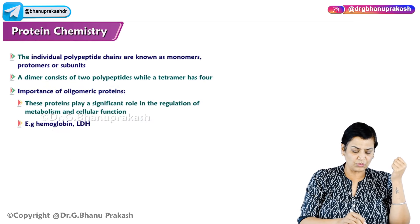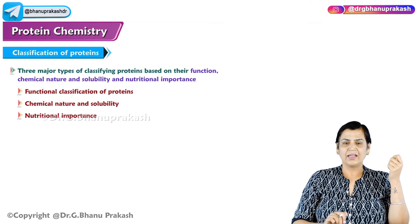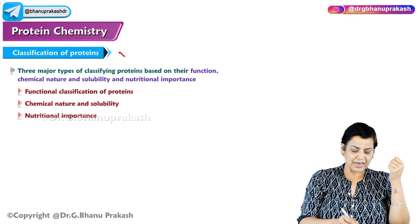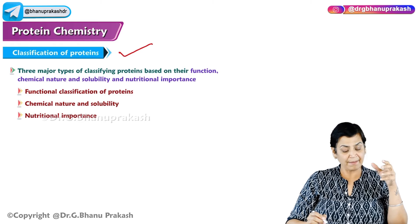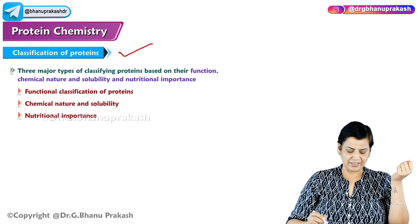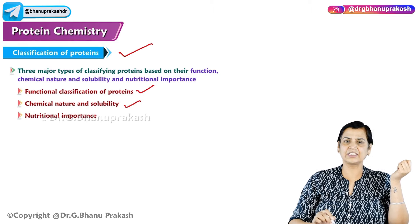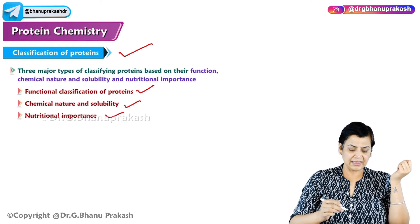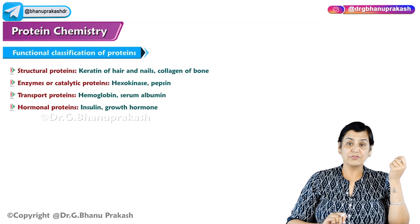After discussing the structural organization of proteins, we come to the classification of proteins, which is a very important topic. Proteins can be classified by different methods: functional classification, chemical nature or solubility, and nutritional importance. Let's start with functional classification of proteins.